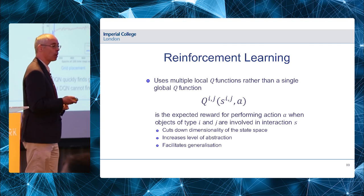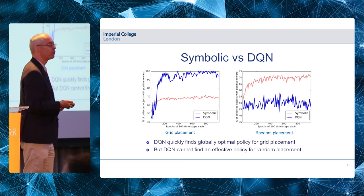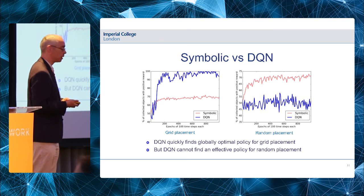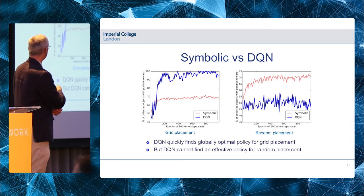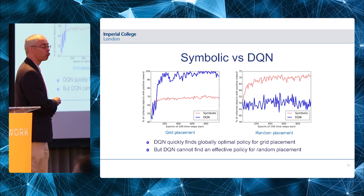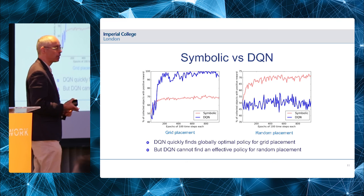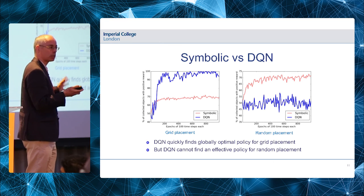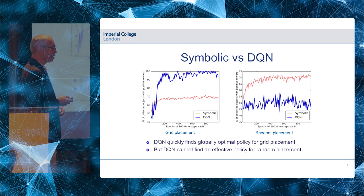These graphs compare our approach with DeepMind's DQN. We're not pretending our prototype is very good yet. On the grid-placement version, it learns a sub-optimal policy — it gets much better than chance quickly, but DQN reaches an optimal policy faster. The real interest is the random-placement case: over the number of epochs we tested, DQN was unable to do better than chance, whereas our system very rapidly learned the best policy it's currently capable of — getting things right 70% of the time.